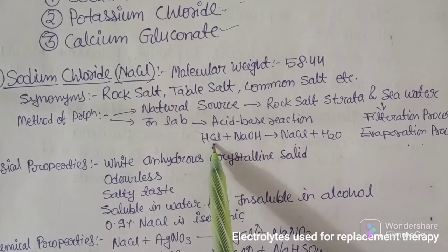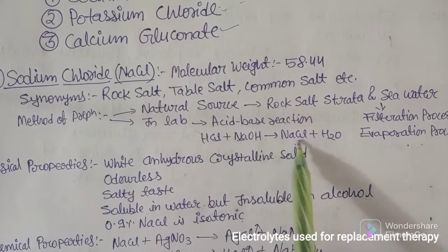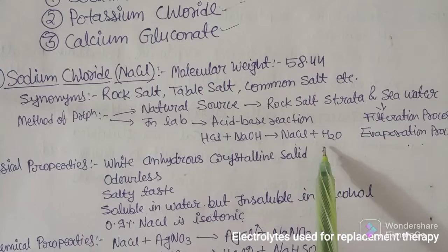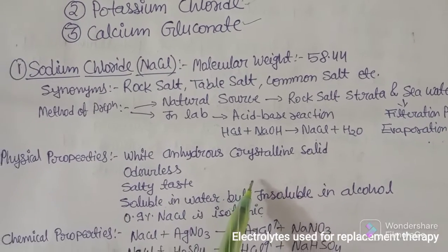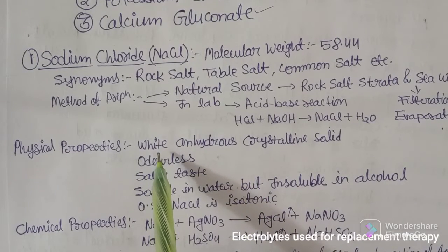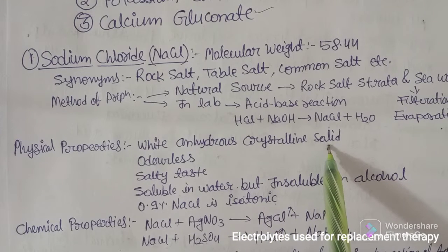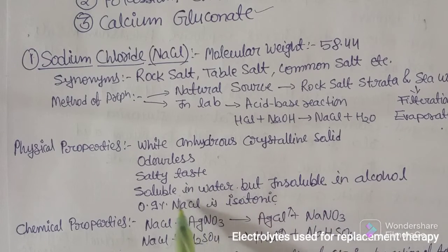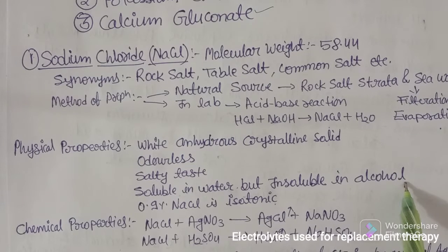In the laboratory, sodium chloride is obtained by an acid-base reaction — for example, HCl (acid) reacting with NaOH (base) will form NaCl and water (H₂O). Coming to physical properties, sodium chloride is a white anhydrous crystalline solid. It is odorless with a salty taste, soluble in water but insoluble in alcohol — remember this point, as this is different from most compounds.